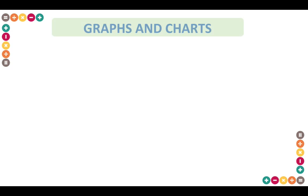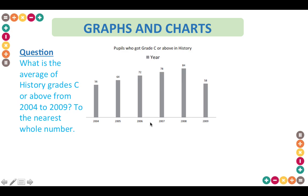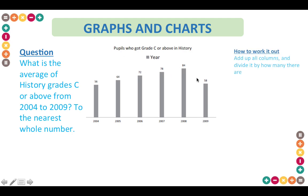Here is a different type of maths question relating to graphs and charts. The question asks: what is the average of history grade C or above from 2004 to 2009 to the nearest whole number? Here we have the bar chart with years along the bottom and the number of people who scored grade C or above in history. To work out the average, you add up all of the columns and then divide by how many columns there are.